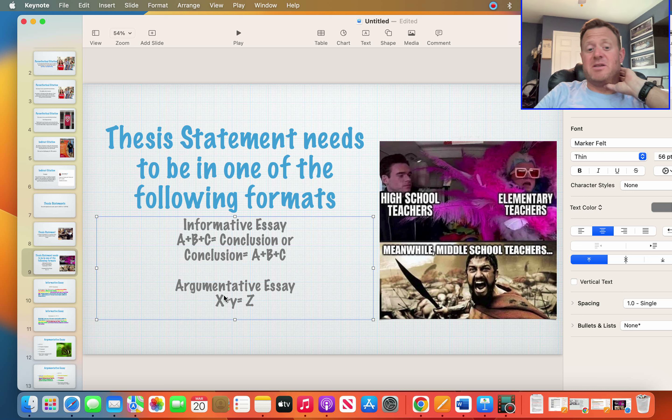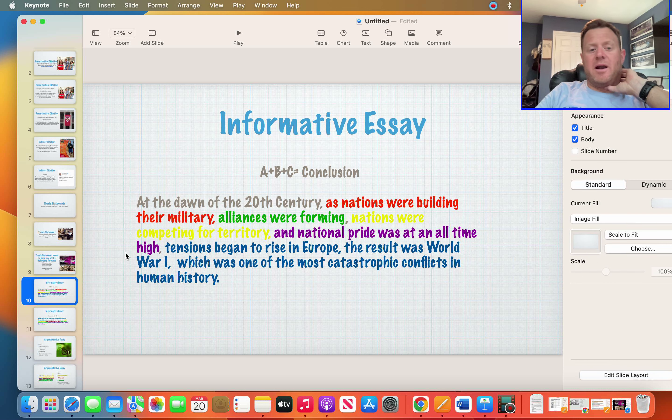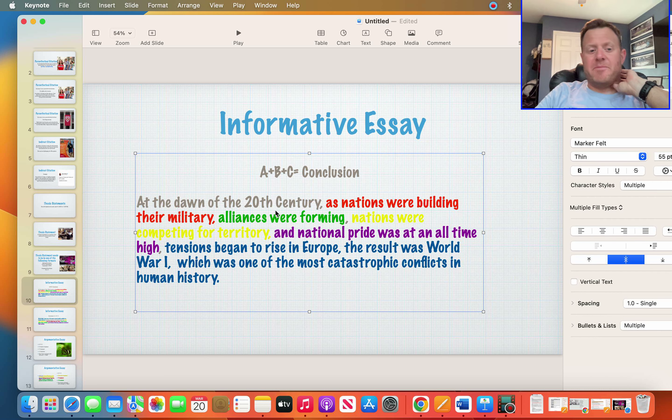The argumentative essay is a little more complex, but if you get this one and then you get an argumentative essay on the Florida State test, whatever they call it now, you're going to hammer that. You're going to do really well. So my informative essay: At the dawn of the 20th century, as nations were building the military, alliances were forming, nations were competing for territory, and national pride was at an all-time high, tensions began to rise in Europe. The result was World War I, which was one of the most catastrophic conflicts in human history.